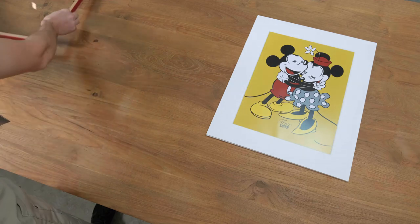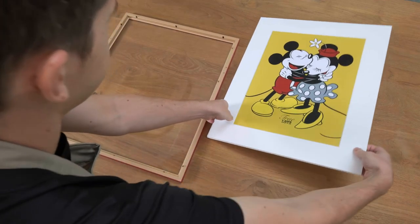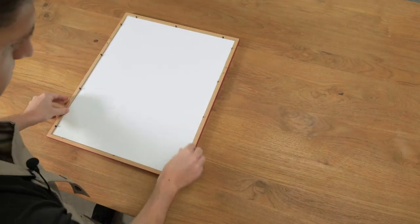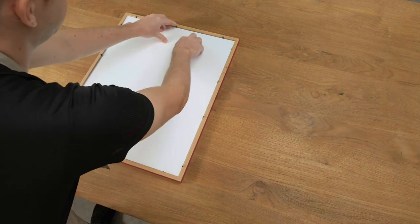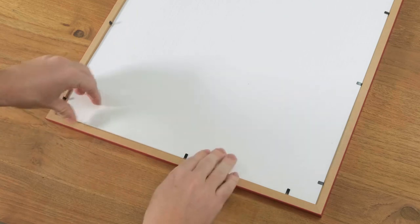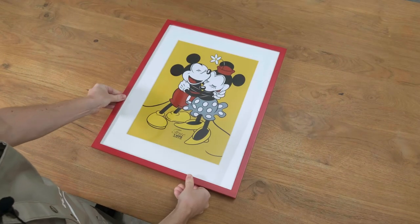Then we can bring the frame back in, turn over the item, place it back into the frame, push down the black flexi tabs, and there we go—another mounted item.